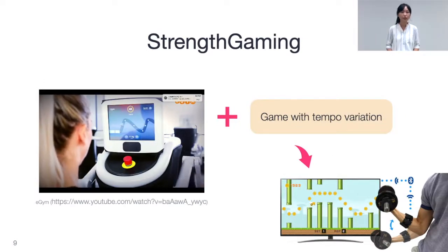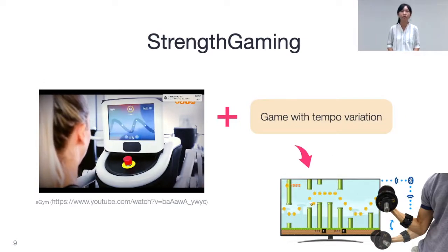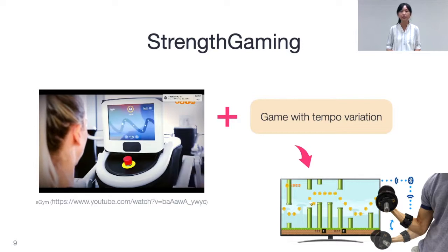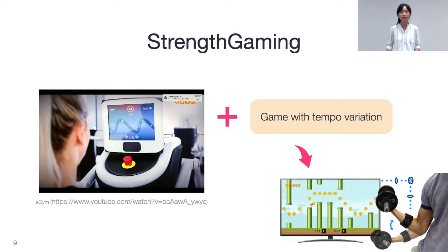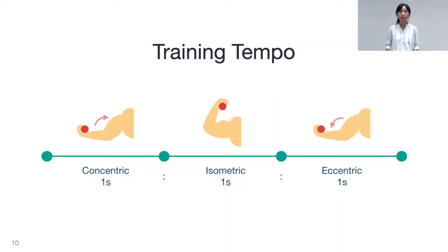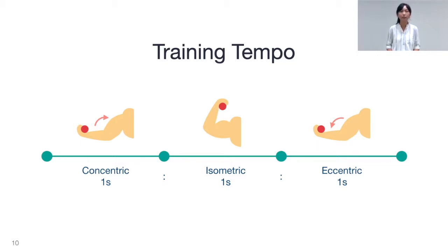So we try to use dynamic tempo variation to improve gameplay experience. Talking about tempo — what does tempo mean in strength training? It describes the timing ratio of the three distinct phases of an exercise's repetition according to muscle activities.